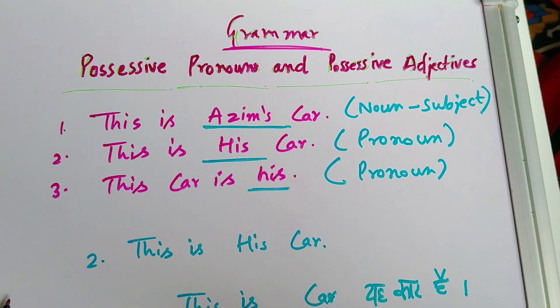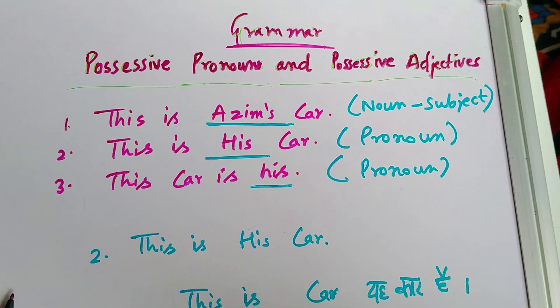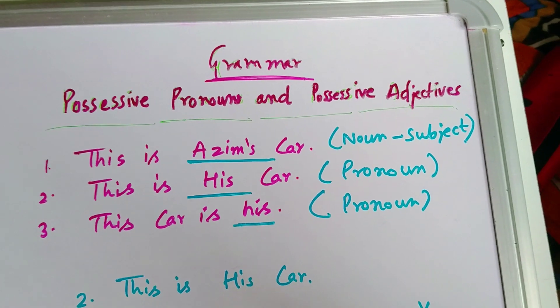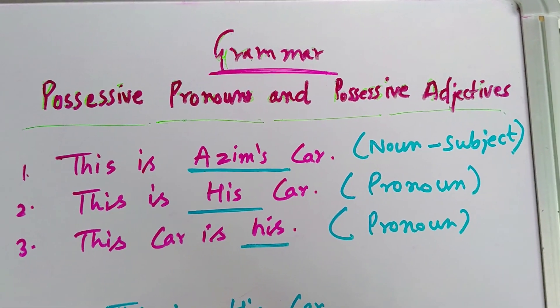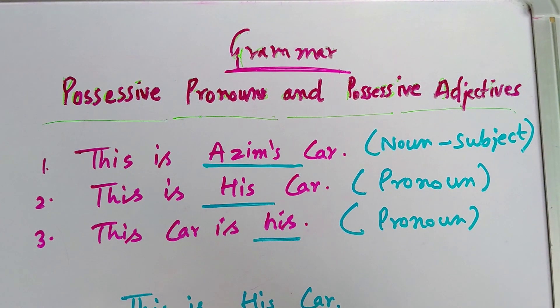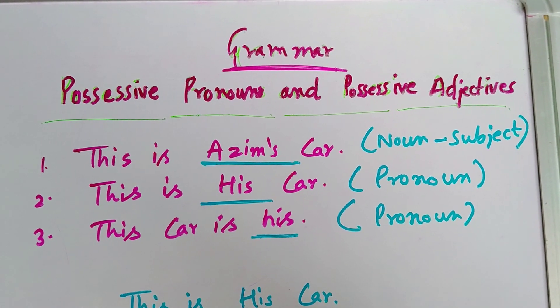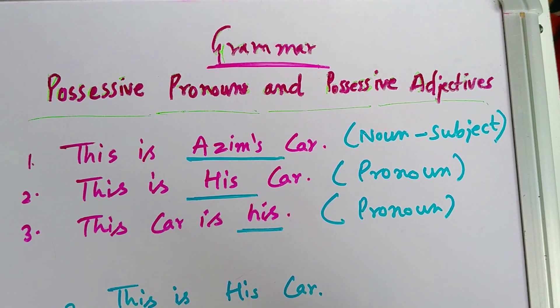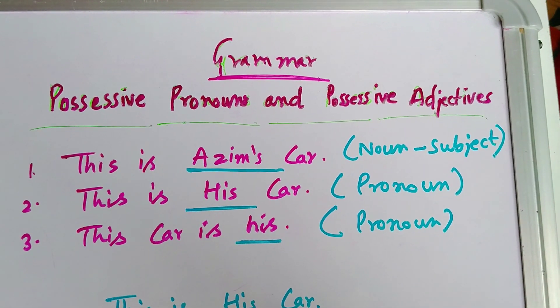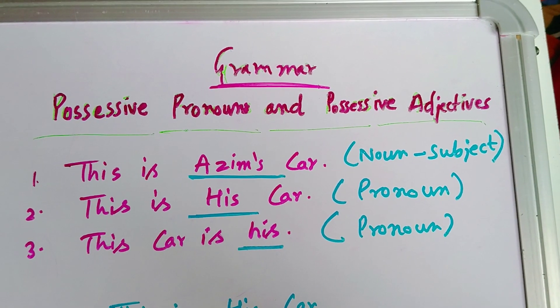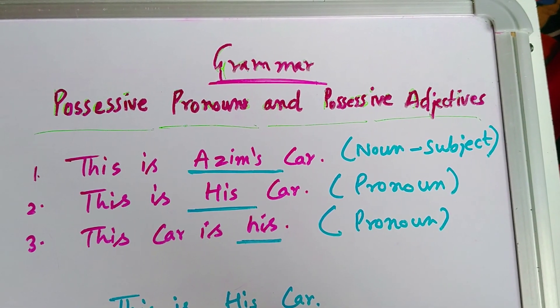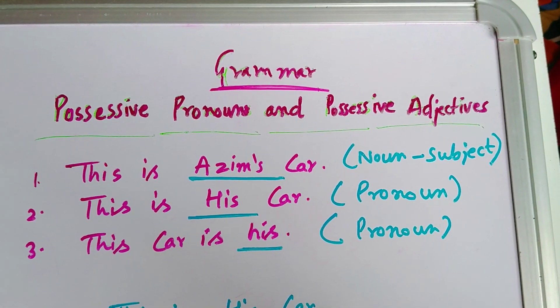Now if you can see the third sentence, this car is his. Again, his is a pronoun, we all know. Now how do we differentiate which possessive pronoun is and which possessive adjective is? Basically, you have to keep two things in your attention. If your pronoun is his, her, mine, ours, theirs, its - if these words come at the end or after reading that sentence, if you don't understand something about noun, then it becomes your possessive adjectives.